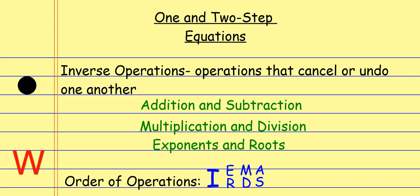When you think about order of operations — IRMDAS — remember that addition and subtraction were tied, multiplication and division were tied, and exponents and roots are tied. The reason for that is because addition and subtraction are technically the same operation; subtraction is just the opposite of addition. Multiplication and division are technically the same operation — just opposite versions. And that's why they work as inverse operations. That's why they cancel each other out.